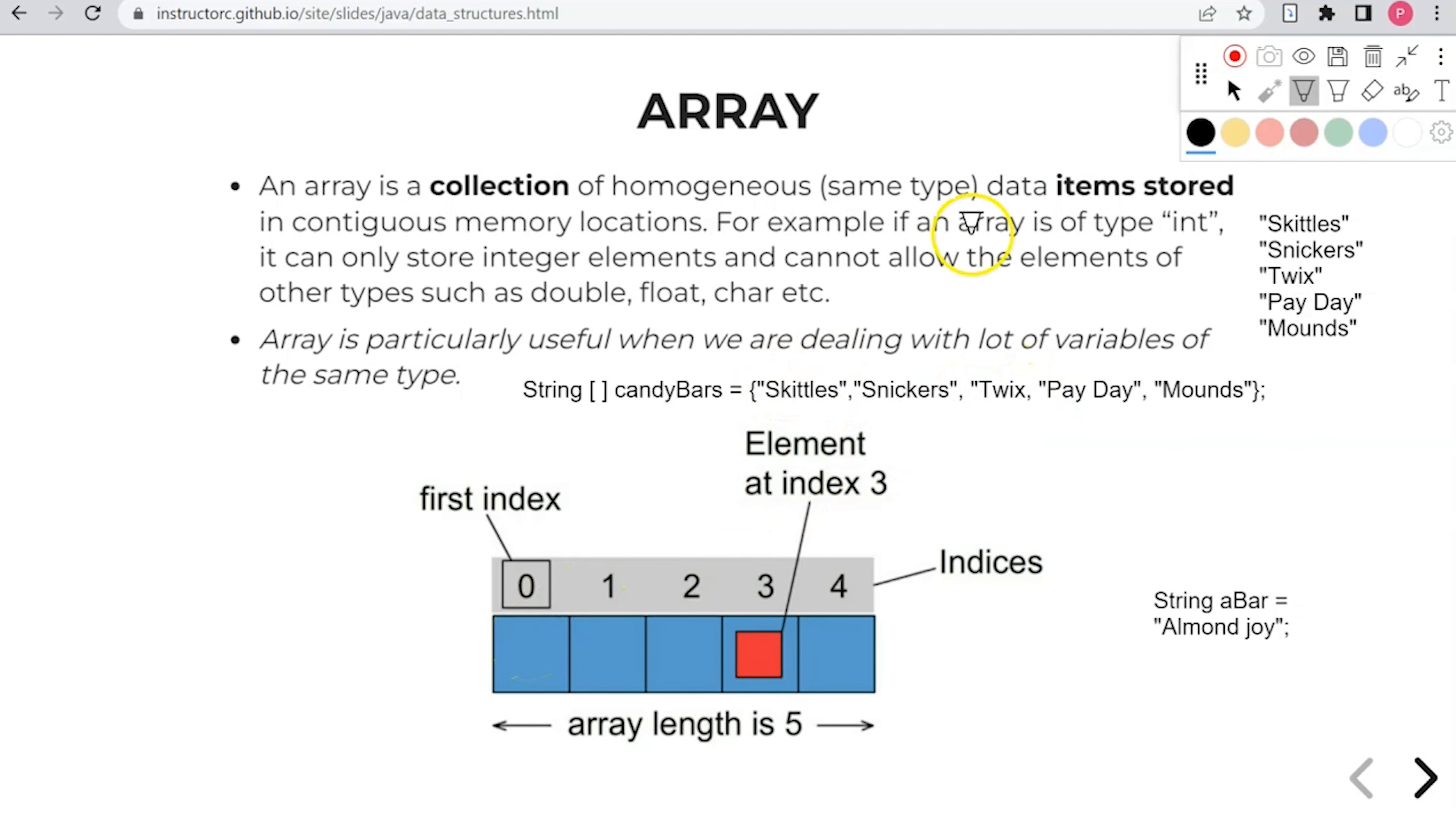So if we were to put a particular index on our current array that we have for candy bars, Skittles would be at index zero. Snickers would be at index one. Twix at two. Payday at three. And then Mounds at four.